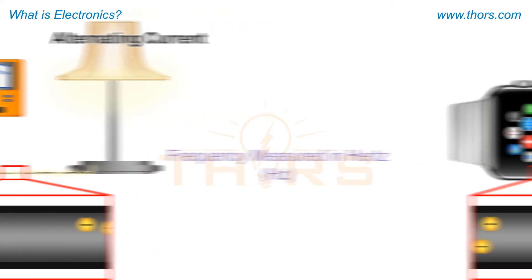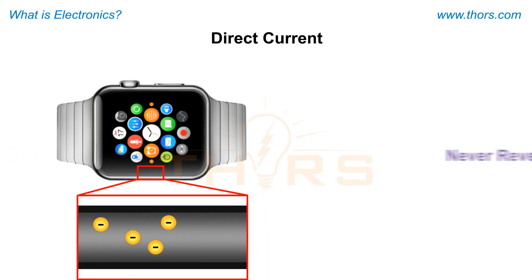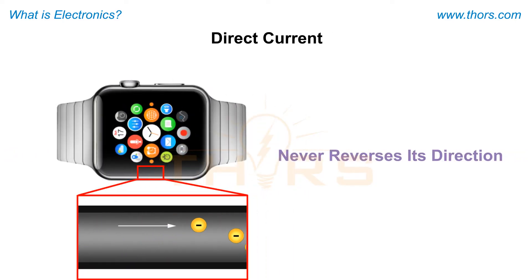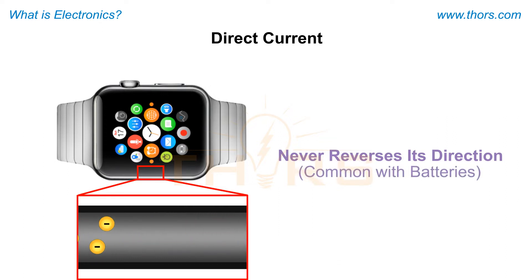Direct current flows in either the positive or negative direction, but never reverses its direction. A common circuit that utilizes direct current is the one with a battery-powered source.